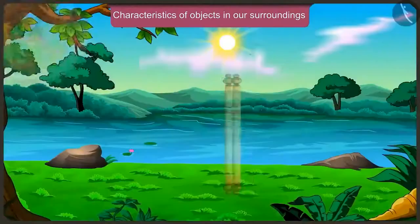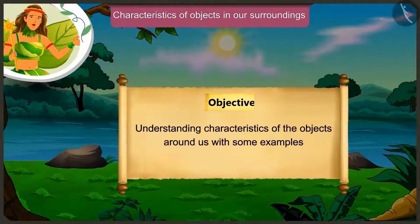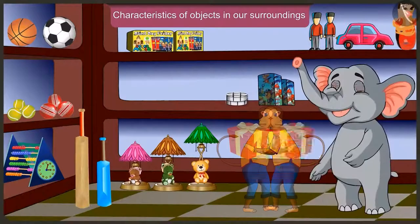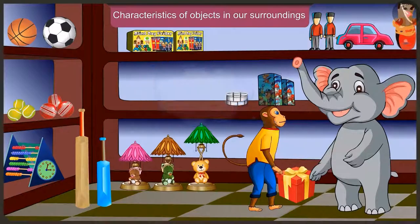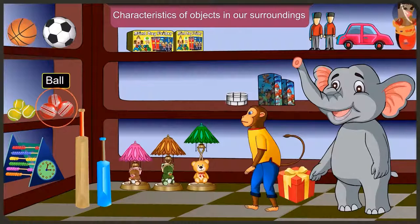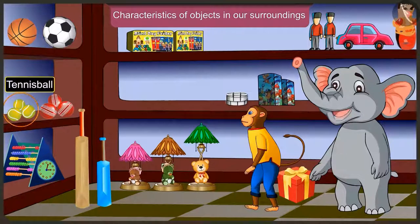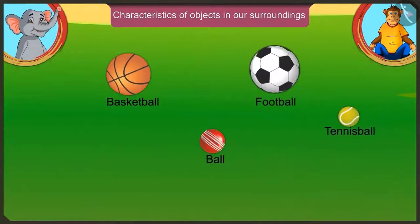Today we will understand the characteristics of objects around us with some examples. Which things here can be easily rolled? We can easily roll a basketball, ball, football and tennis ball, because they don't have any corners and they have a curved surface.